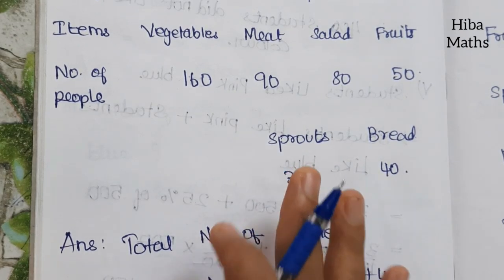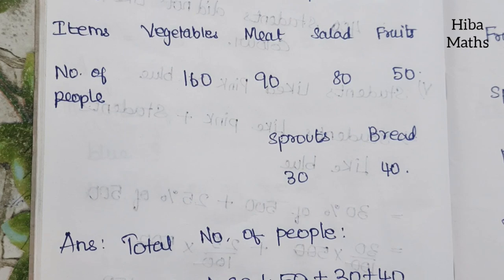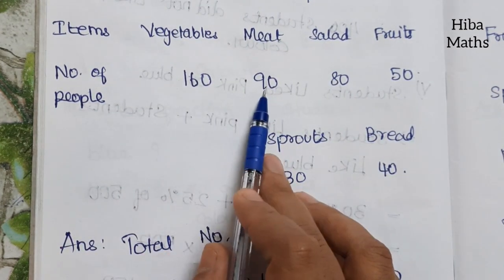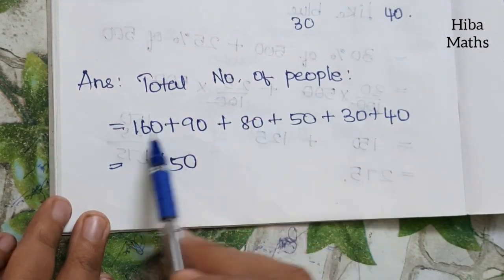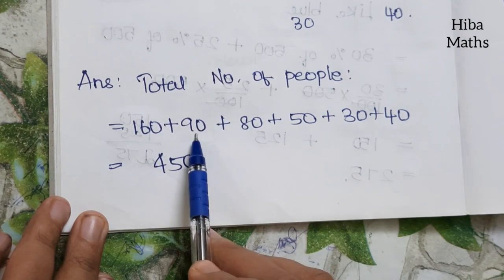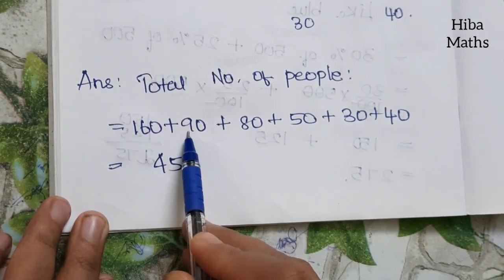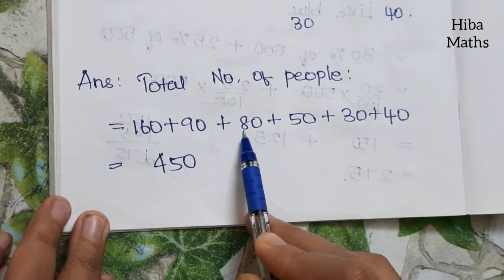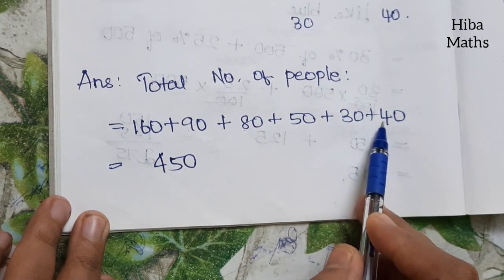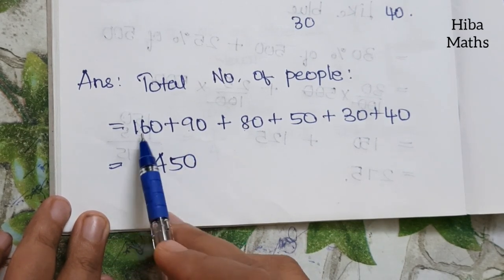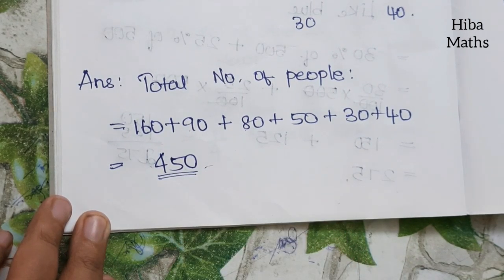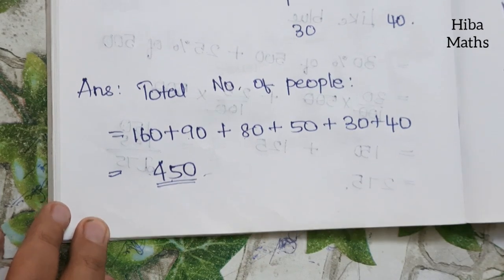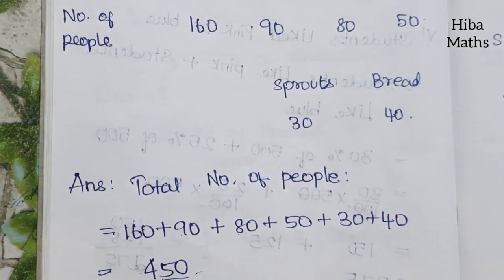If you want to find the total number of people, add all values: 160 plus 90 plus 80 plus 50 plus 30 plus 40. The total number of people is 450.